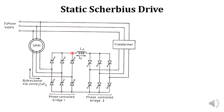The basic concept of the static Scherbius drive is that it allows the flow of slip power in both directions. In the case of a static Kramer drive, the slip power flows from the rotor through the converters, through the transformer, and back to the power supply — that was the only direction. But the static Scherbius drive allows slip power to flow both from motor to supply mains and from supply mains to motor.